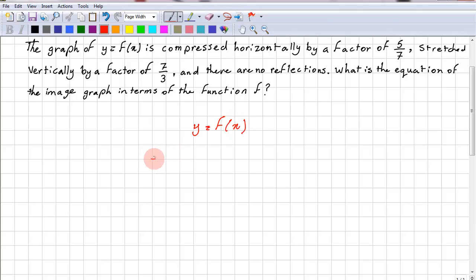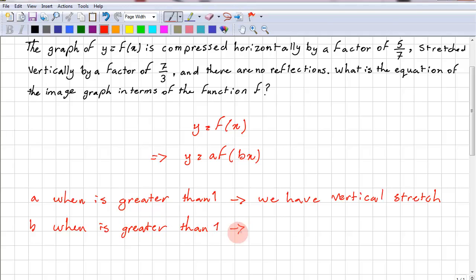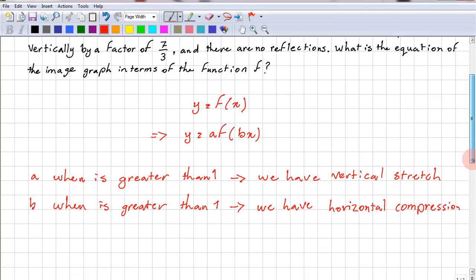Okay, our function is y = f(x), and the transformation function is y = a*f(bx). When a is greater than 1, we have a vertical stretch. When b is greater than 1, we have a horizontal compression.